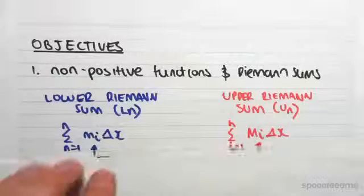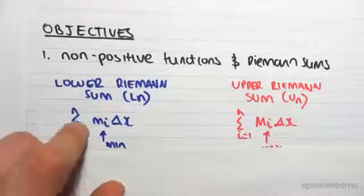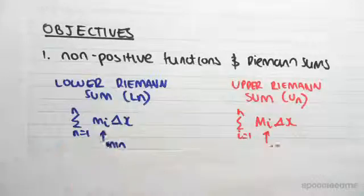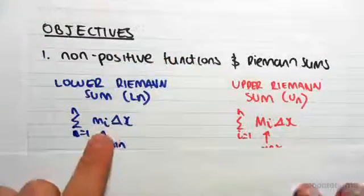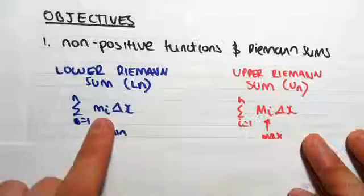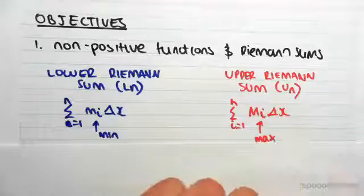So just the definition of lower and upper Riemann sums again. The lower Riemann sum is the sum of i equals 1 to n, m_i times Δx. We're just summing up rectangles where this m is the minimum, and the upper Riemann sum is very similar except this M is the maximum value.